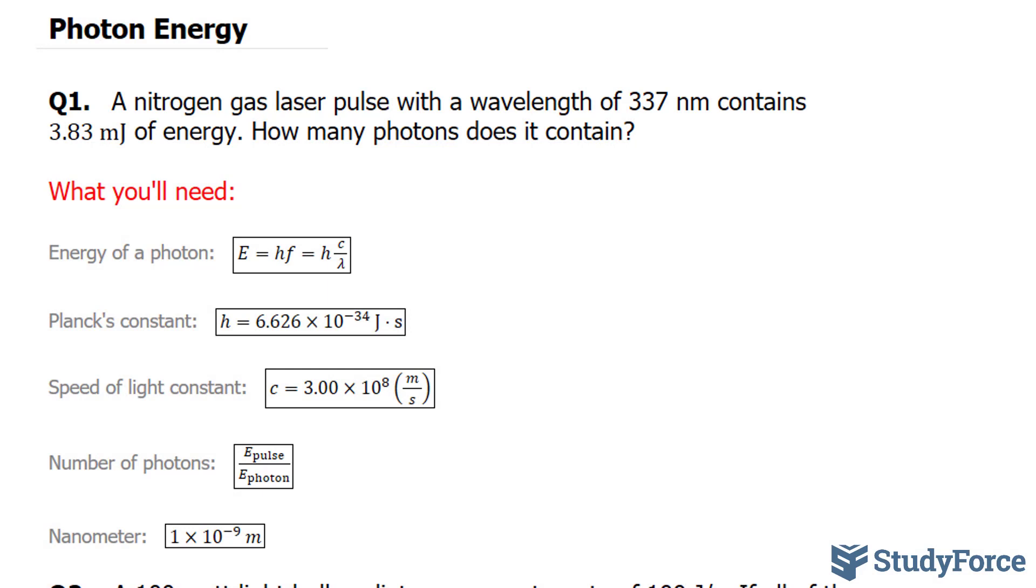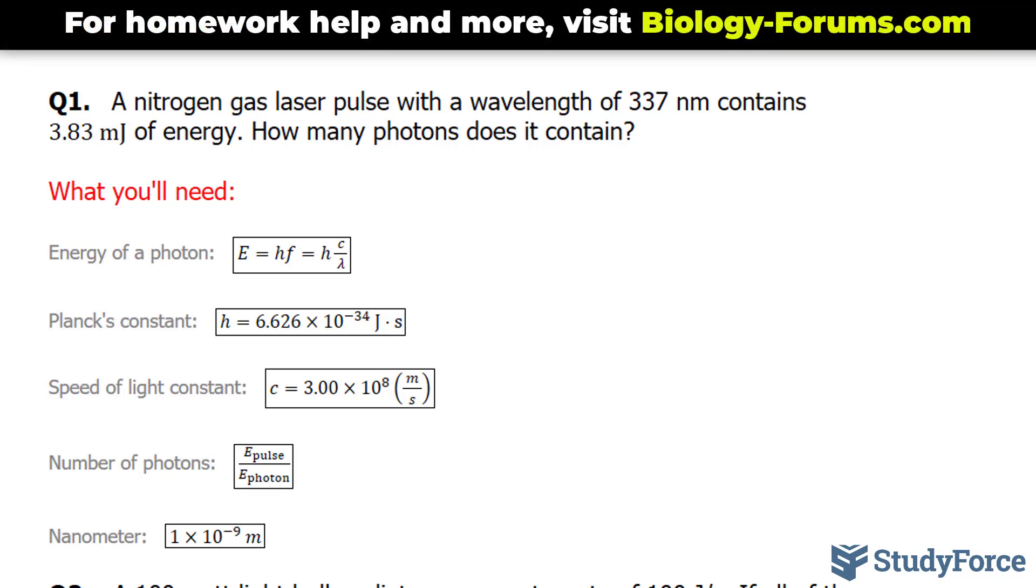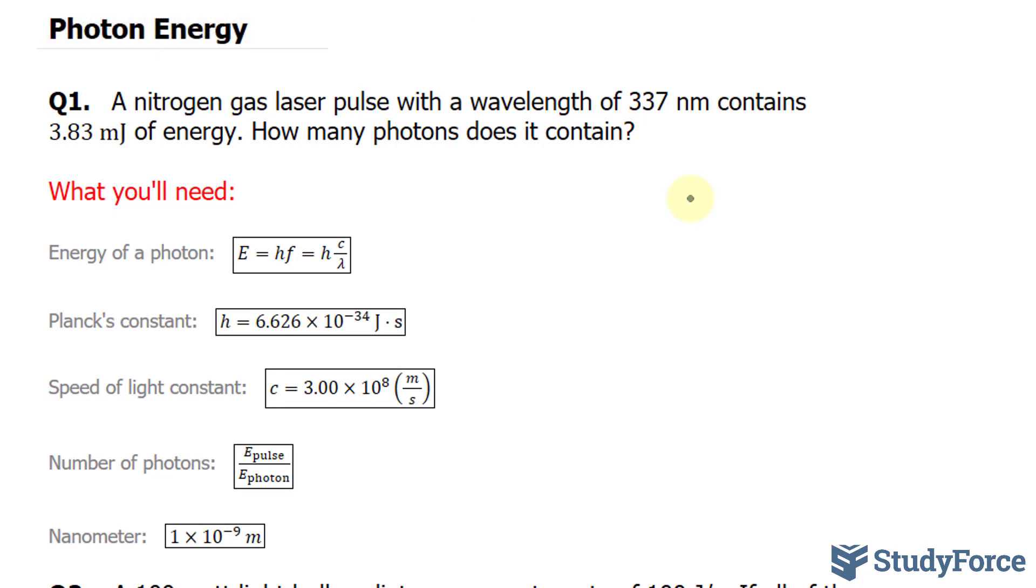What we've been given here is the wavelength and the total energy of a light pulse and are asked to find the number of photons it contains. So let's start off by writing out everything we know. The wavelength, which we'll represent with the letter lambda, is 337 nanometers. In addition, the energy of the pulse, which I'll represent with the letter E and not to be confused with the energy of a single photon, is equal to 3.83 millijoules.